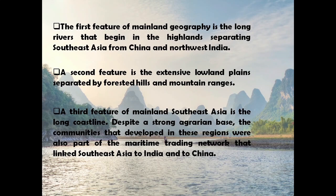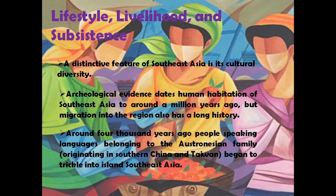Despite a strong agrarian base, the communities that developed in these regions were also part of the maritime trading network that linked Southeast Asia to India and to China. These fertile plains are highly suited to rice growing. Ethnic groups such as the Thais, the Burmese, and the Vietnamese developed settled cultures that eventually provided the basis for modern states.